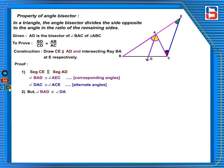But angle BAD is congruent to DAC, given that AD is a bisector of angle BAC.